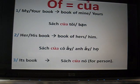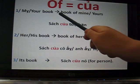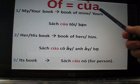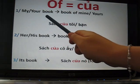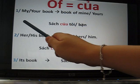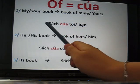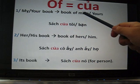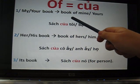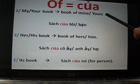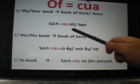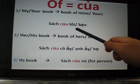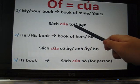What is của? Của means 'of' in English. So, for example, my book or your book — you should understand it in Vietnamese as 'book of mine' or 'book of yours.' Turning that into Vietnamese, it becomes sách của tôi or sách của bạn. Sách means book, của means of, tôi means mine.